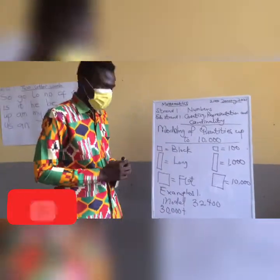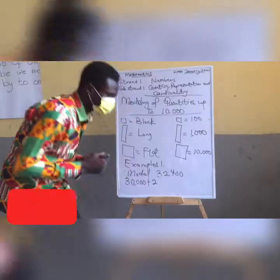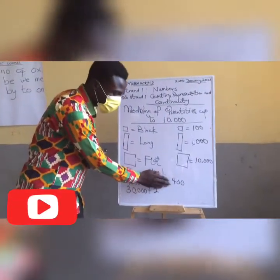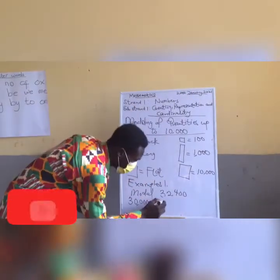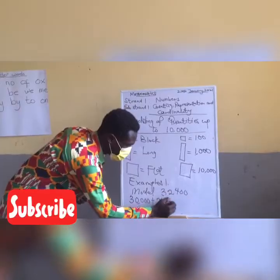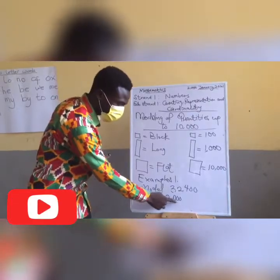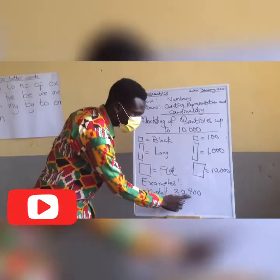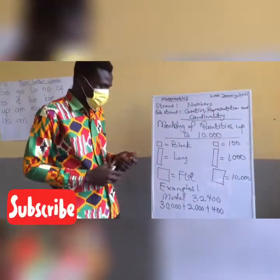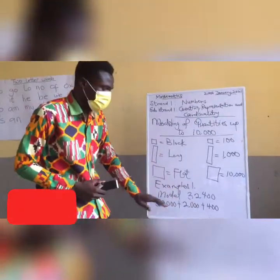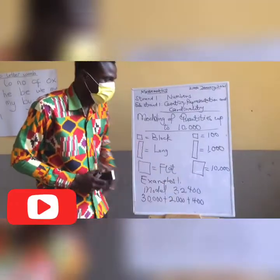We bring a plus sign. The next number is 2. We write the 2, and when we cover it, how many numbers are left? 1, 2, 3 — three numbers, so we put 3 zeros. This gives us 30,000 plus 2,000. We are left with 400, so we bring plus 400. When we put all these numbers together, we get 32,400.